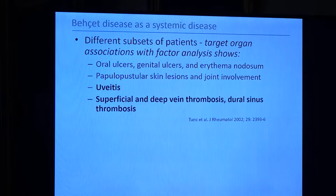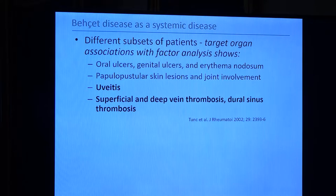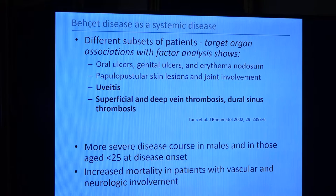Although it is known as a single disease, there are different subsets of manifestations. Some patients have only mucocutaneous manifestations such as oral and genital ulcers and erythema nodosum. There are patients with papulopustular skin lesions, arthritis, and enthesitis. Another subset involves uveitis and ocular manifestations. The fourth subset is vascular manifestations, especially venous involvement, dural sinus thrombosis, and deep vein thrombosis. The disease runs a much more severe course in young males, with increased mortality for neurologic and vascular manifestations.